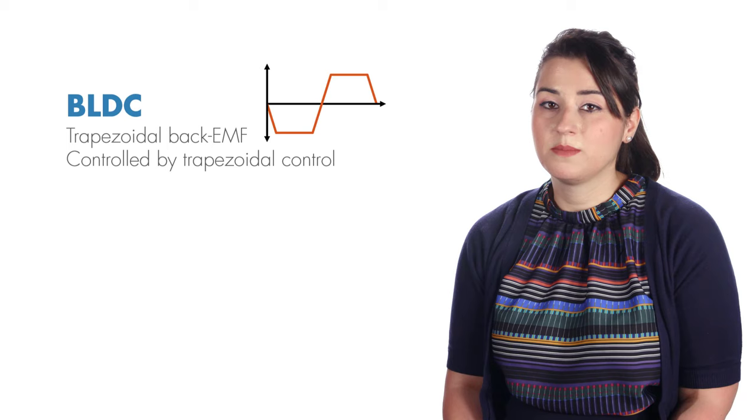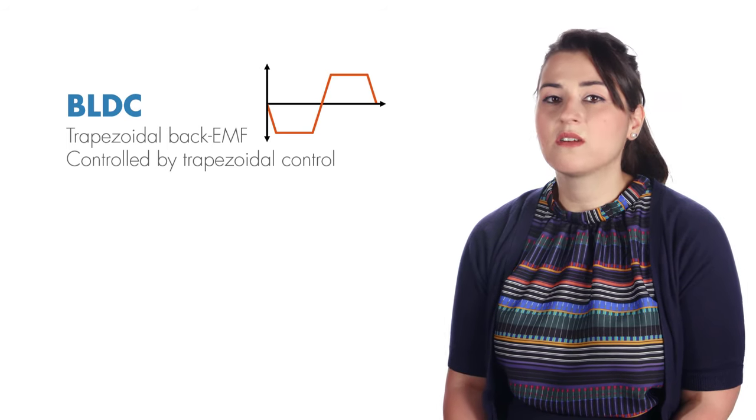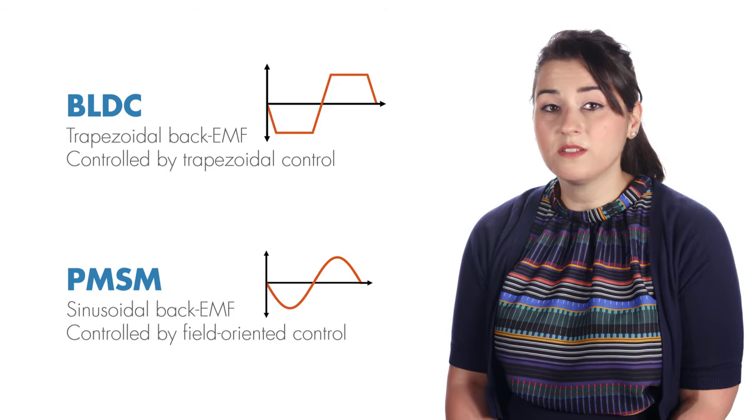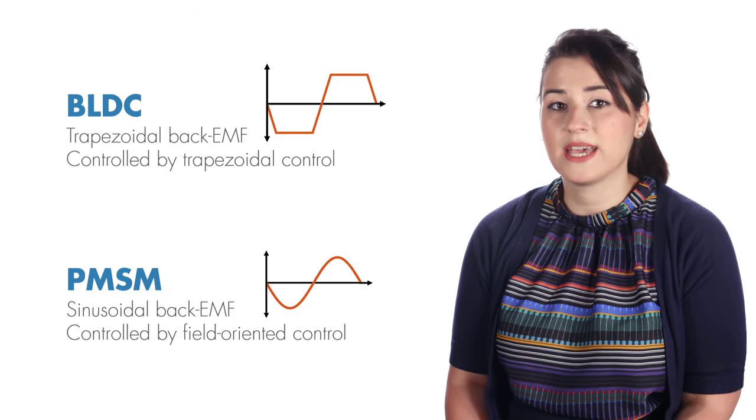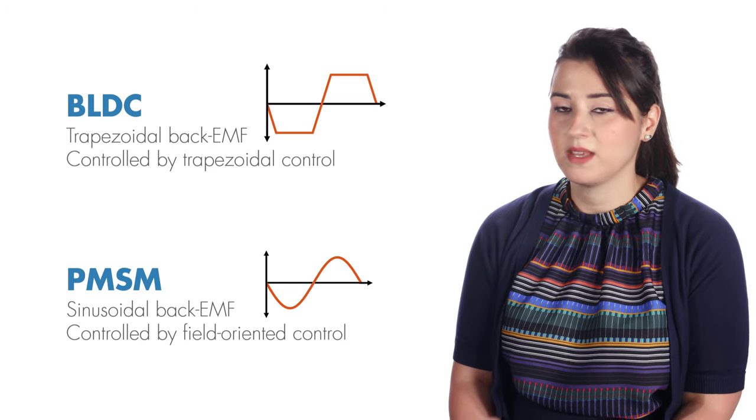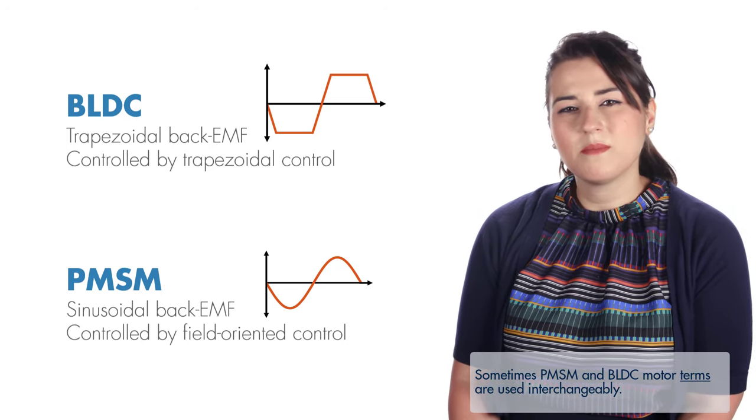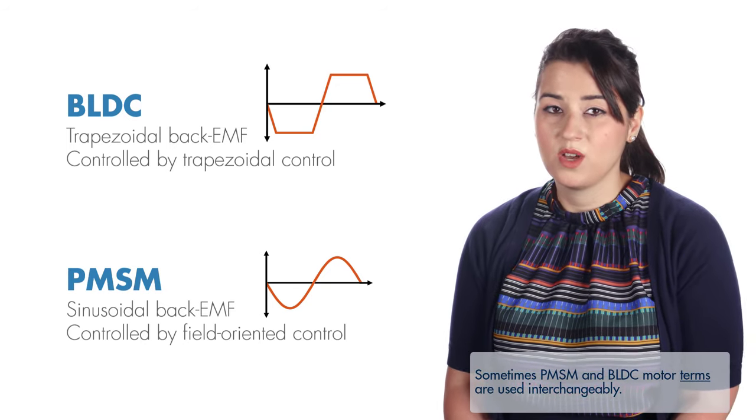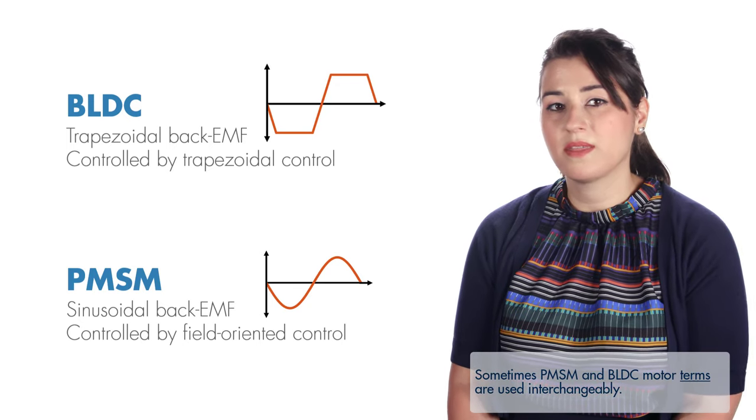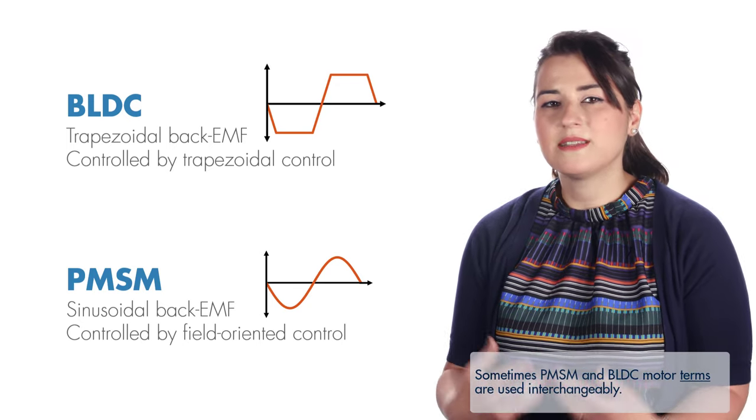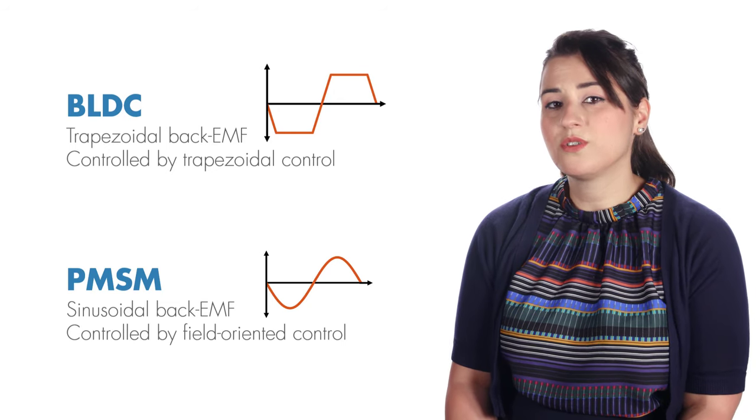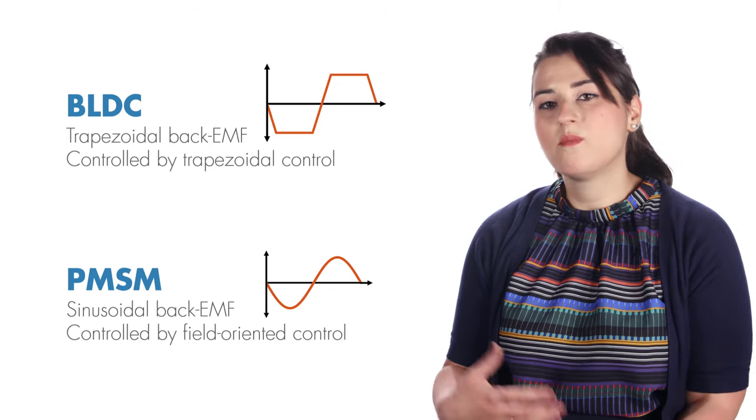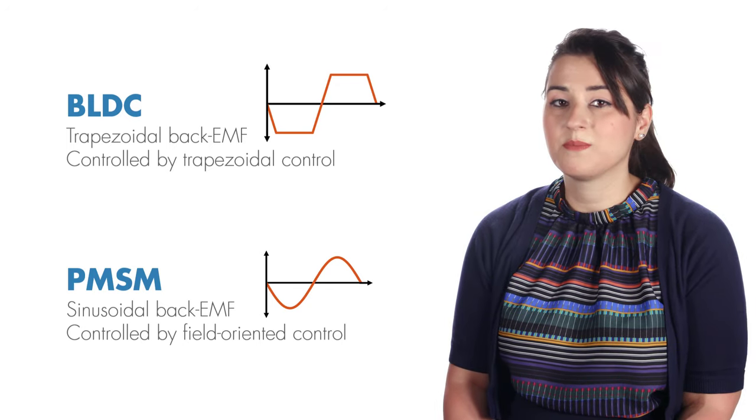BLDCs have a trapezoidal back EMF shape and are commonly controlled by trapezoidal control. But PMSMs are controlled by field-oriented control because they exhibit a sinusoidal back EMF. Sometimes PMSMs and BLDC motors are used interchangeably among the motor control community, which may cause confusion about their back EMF profiles. But in this video series, we will refer to motors with trapezoidal back EMF as BLDCs and motors with sinusoidal back EMF as PMSMs.